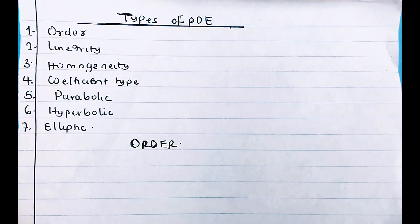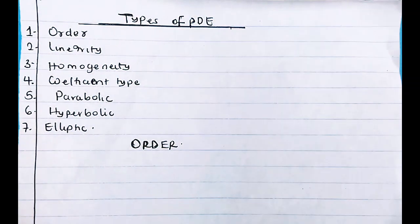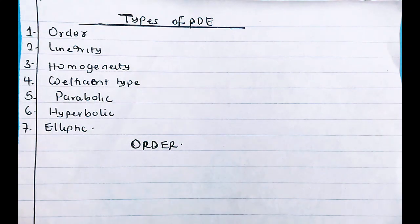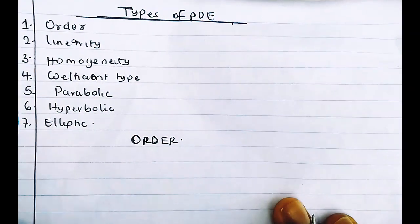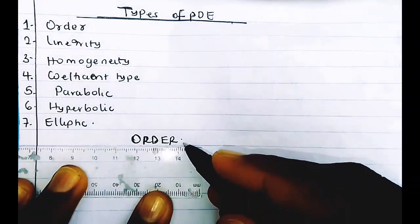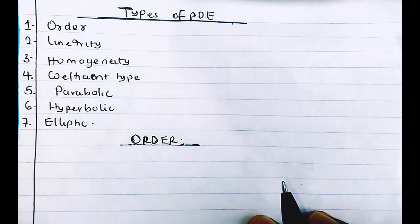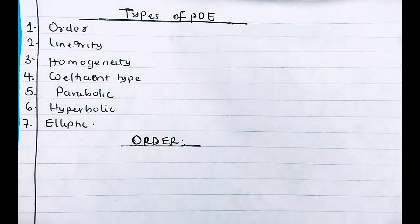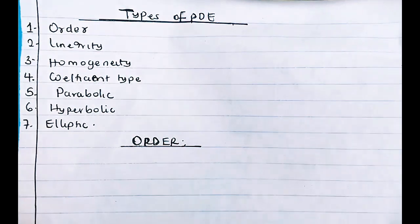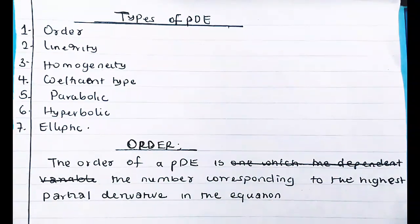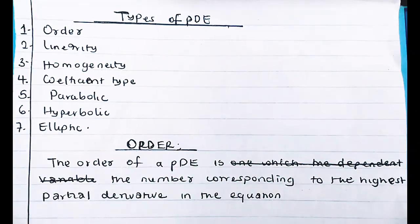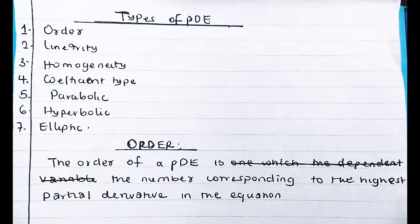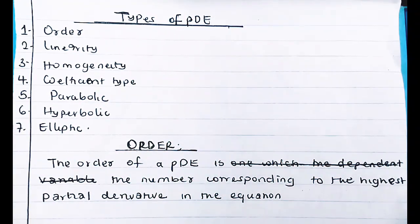We can classify PDEs based on various factors: order, linearity, homogeneity, coefficient type, and whether they are parabolic, hyperbolic, or elliptic. Regarding order — just as with ODEs — the order of a PDE is the number corresponding to the highest partial derivative in the equation.